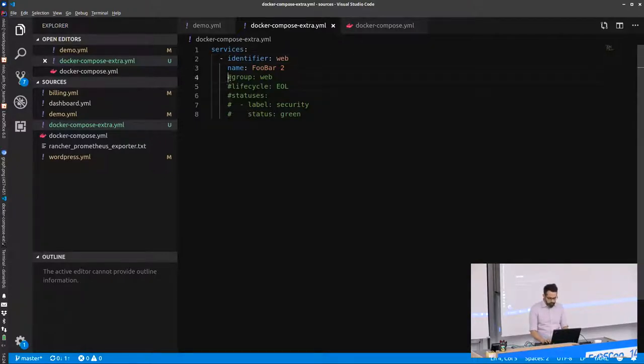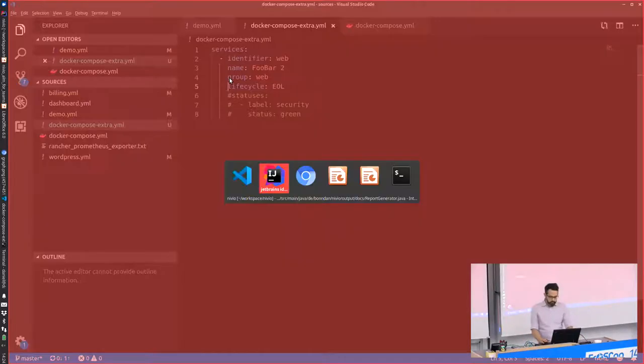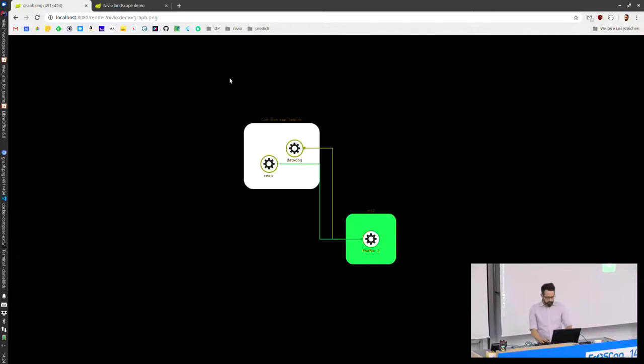And I can now enhance it with more. There are a lot more attributes. For example, a group. I can group services, and they appear in different groups. Or I can add info about service lifecycle. Has the service just been planned? Or is it already end of life? And so on. So I'm saving it and hoping that reload works. What you see now is that I have added this group here to that one service. And now it's displayed in a different rectangle. And still the other connections in that graph are maintained.